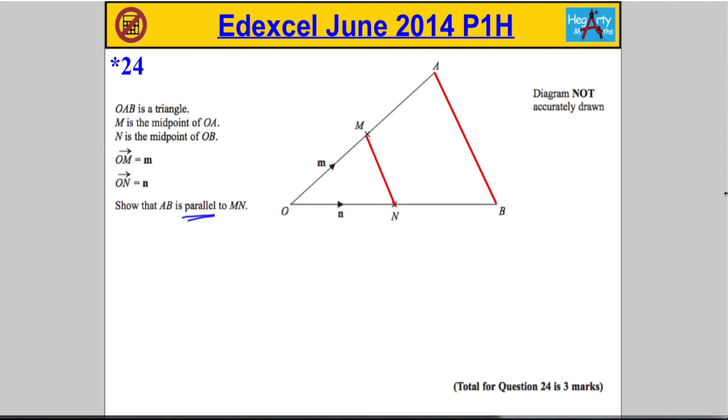Now in order to show that these two are parallel, what we're going to have to do is show that the vector from A to B is a multiple of the vector from M to N. If we show that it's a positive multiple, they must be parallel.